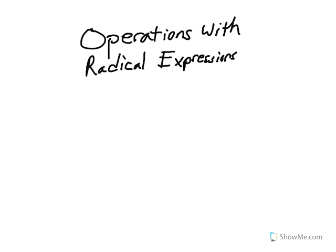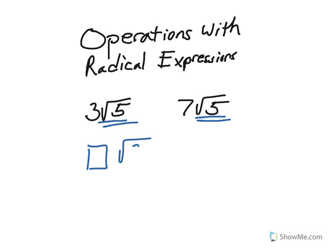Like radicals have different coefficients but the same radical. Unlike radicals have completely different radicals—the values underneath the radical don't match. Coefficients don't matter for unlike radicals. Pause the video and copy this into your notes.